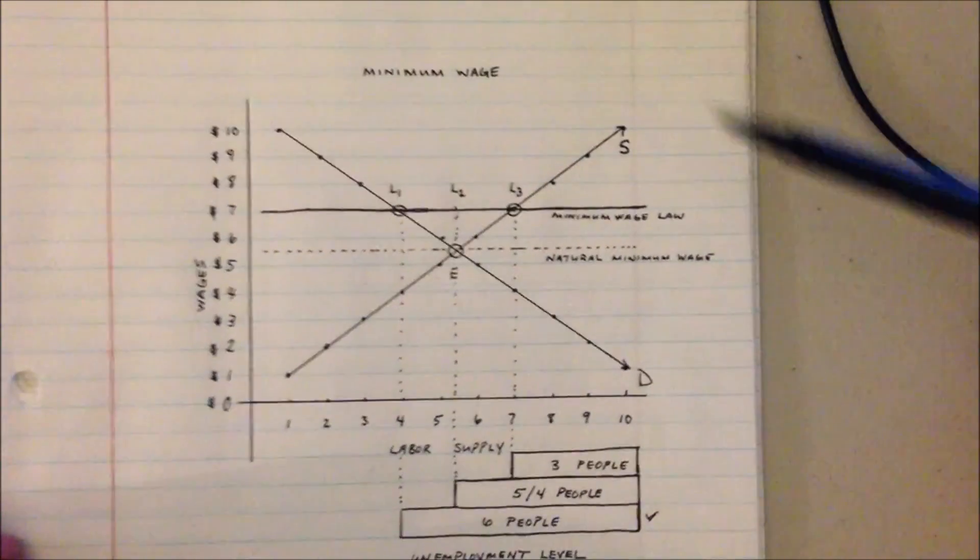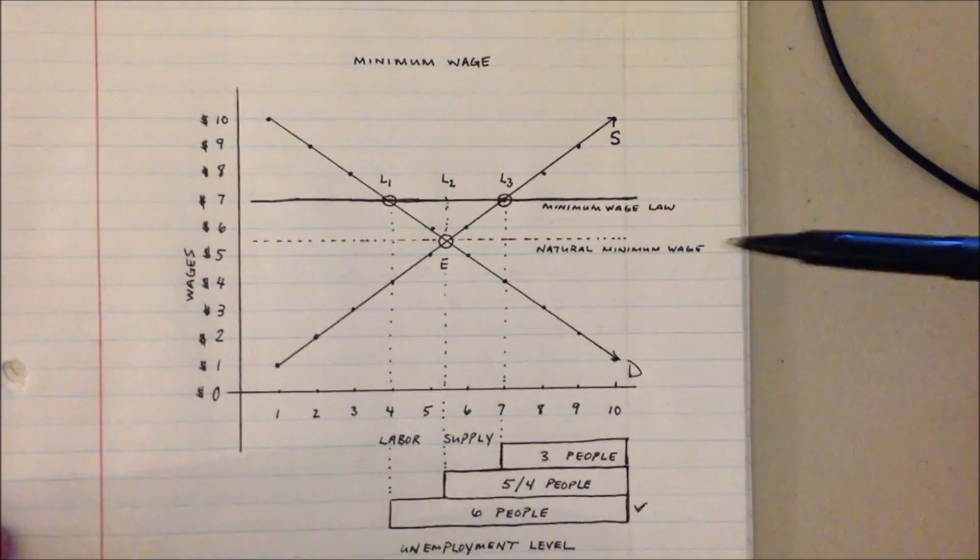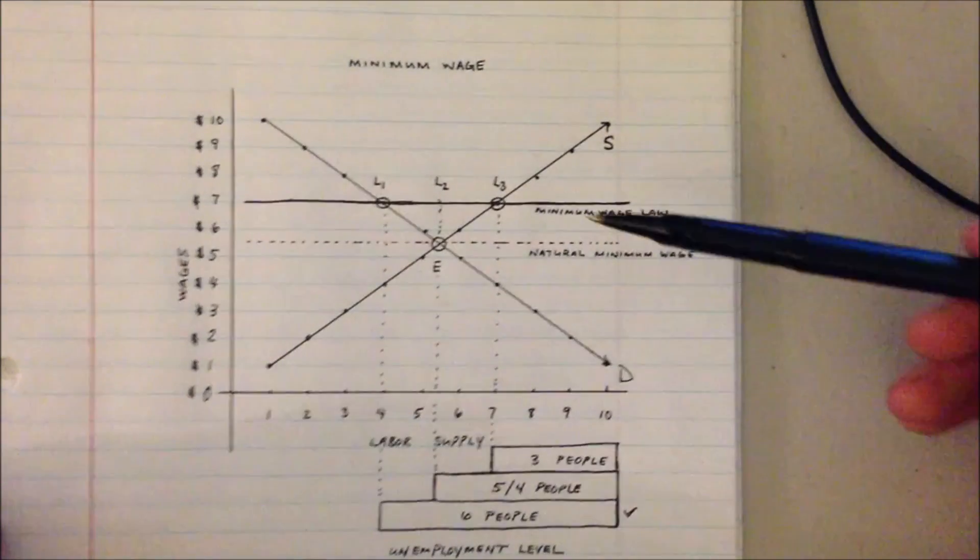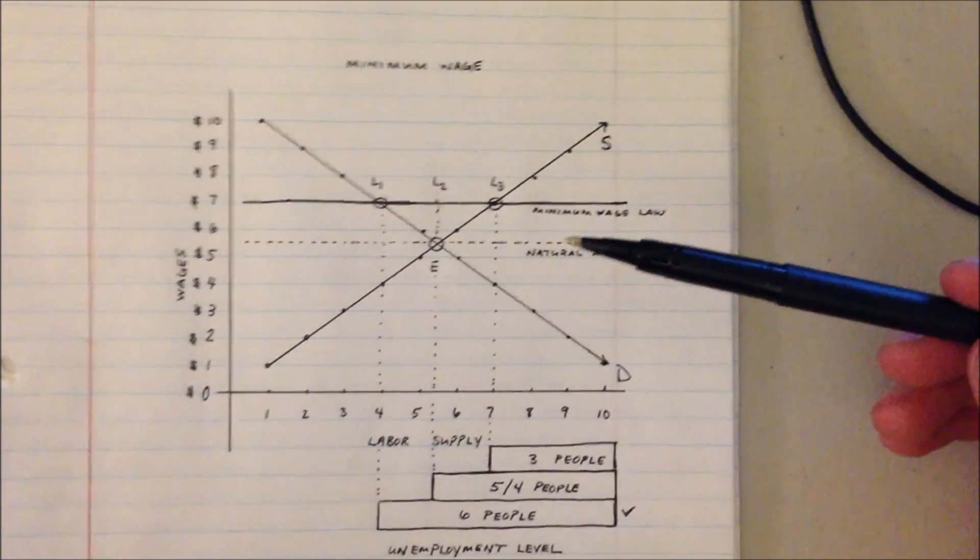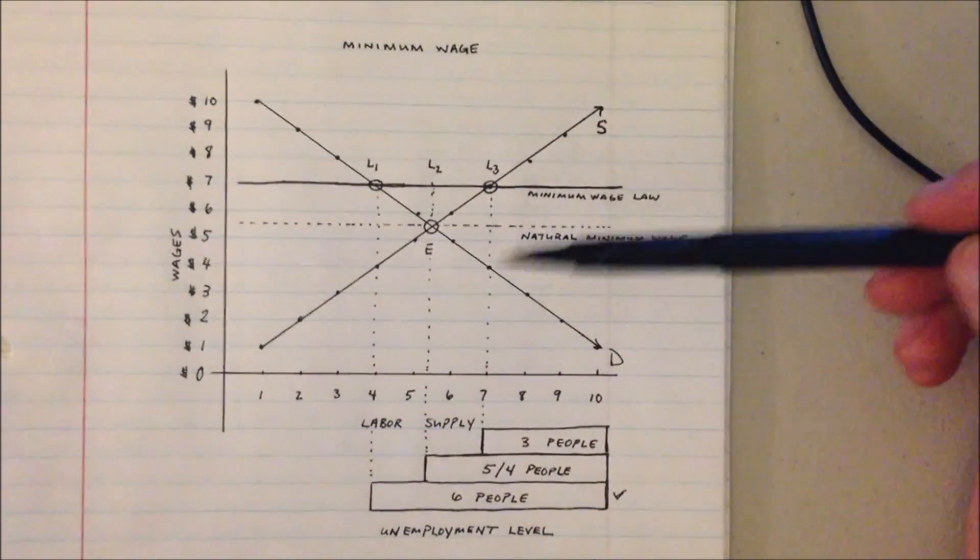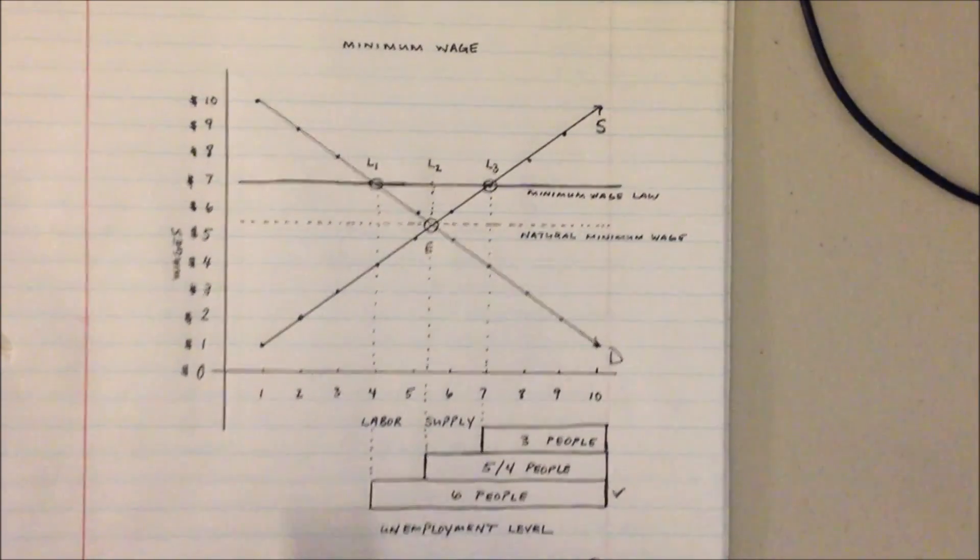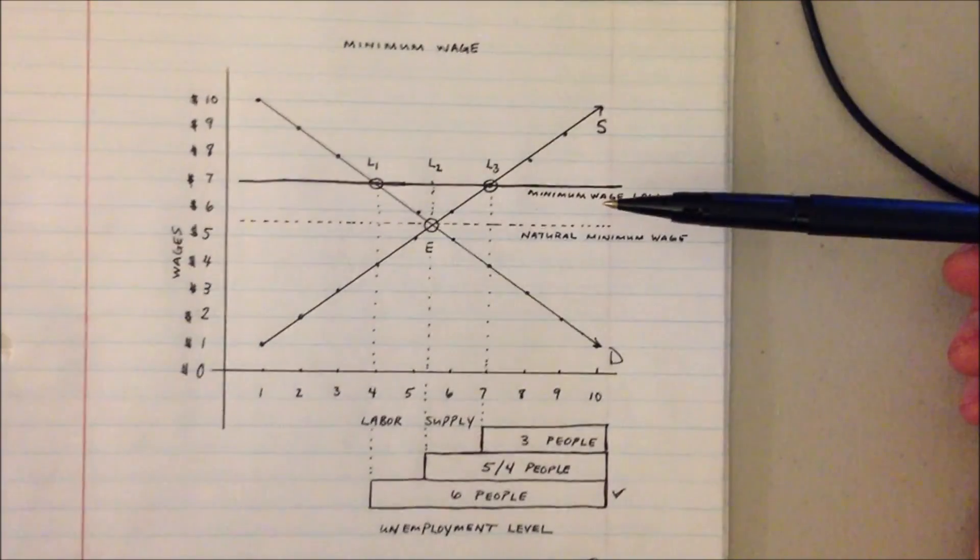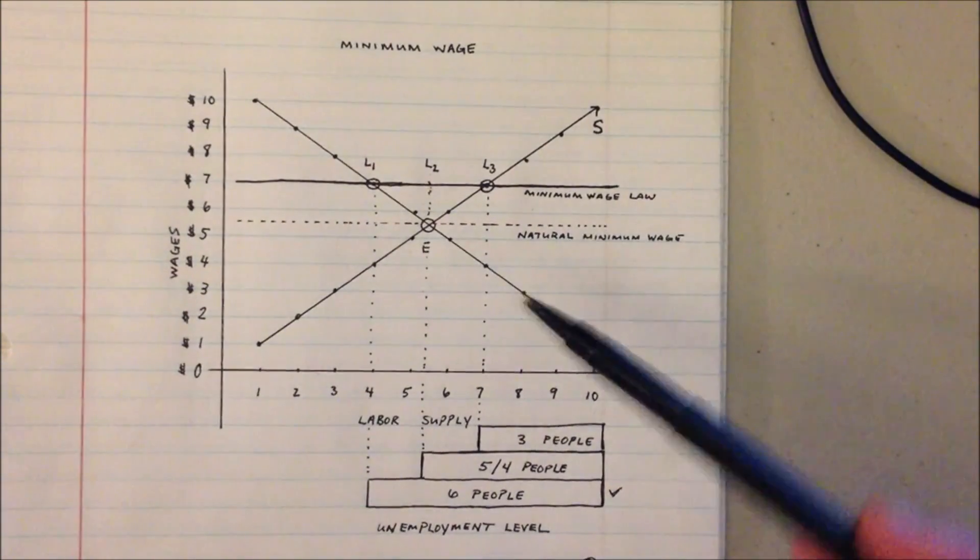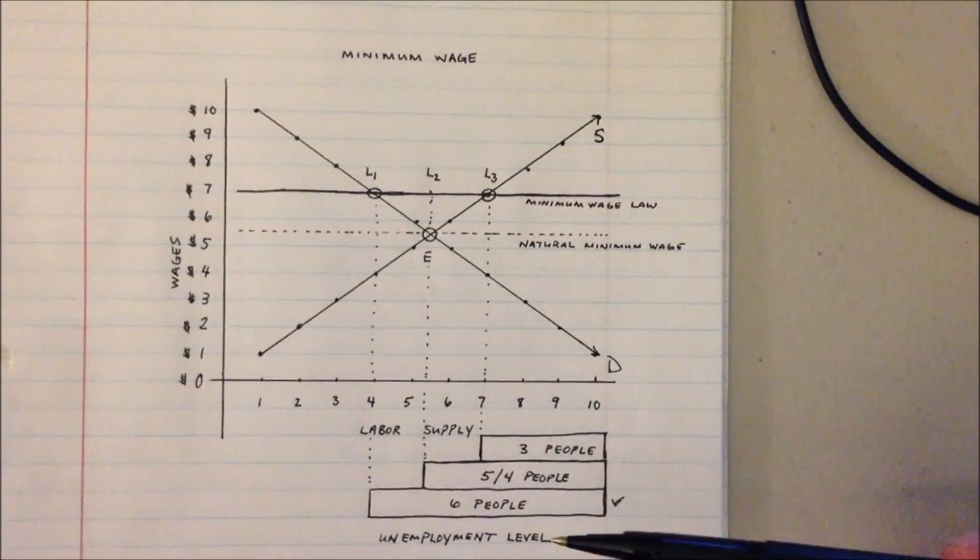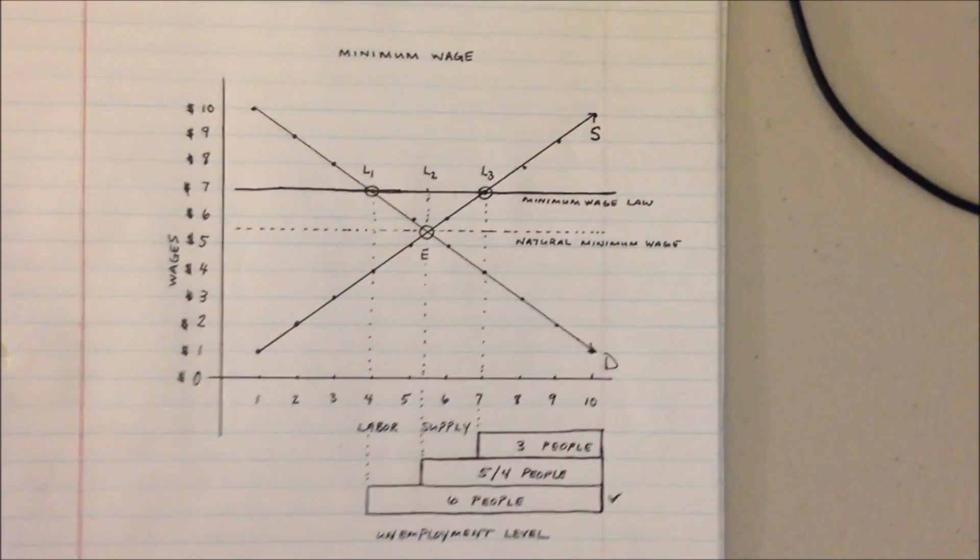So our model can theoretically show us that by increasing our minimum wage law we've increased our unemployment levels. But this model doesn't take into consideration anything about what the living wage is or whether or not this is a good idea or the political reasons that someone might argue for a minimum wage increase. This model just shows us that when the forces of supply and demand are applied to the minimum wage we will have an increased unemployment.